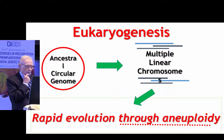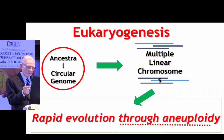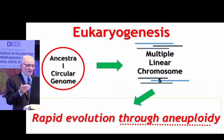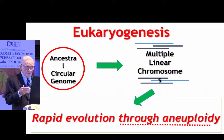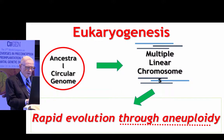Finally, aneuploidy plays a very important role in evolution. The ancestral genome was in a circular form, and it wasn't until multiple linear chromosomes were established that evolution took place — and that was through aneuploid gain and loss of whole chromosomes. The first element in the development of multiple linear chromosomes was the telomere, which presumably evolved into the centromere.